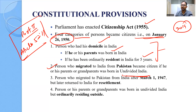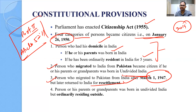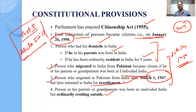Anyone who came to India from Pakistan during the partition period would be an Indian citizen if any of their parents or grandparents were citizens of undivided India — which means India including present-day Pakistan and Bangladesh. Third, persons who migrated to Pakistan from India after 1st March 1947 but came back later to India for resettlement were also given Indian citizenship. Fourth, a person whose parents or grandparents were born in undivided India but who was ordinarily residing outside India was also called a citizen of India.